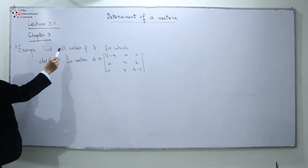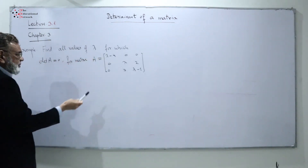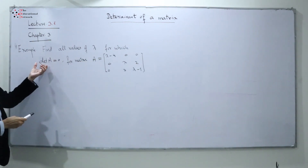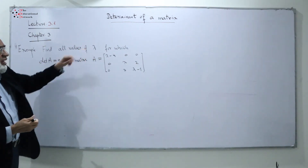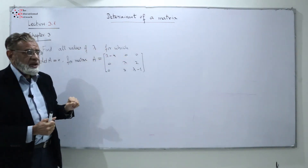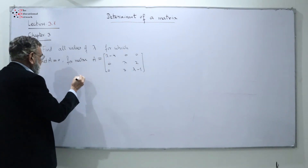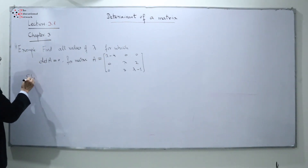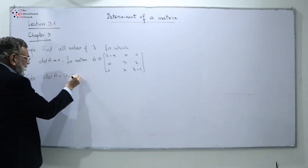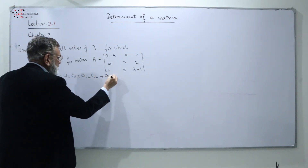We want to solve a new example: find all values of lambda for which the determinant of A equals 0, where A is a given matrix. We call this the determinantal equation. We find det(A), set it equal to 0, and solve for lambda. Looking at the first row, it contains two zeros, so we get only one non-zero term: A11·C11.